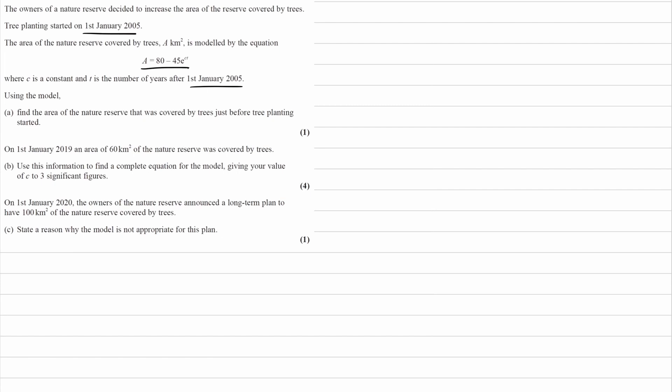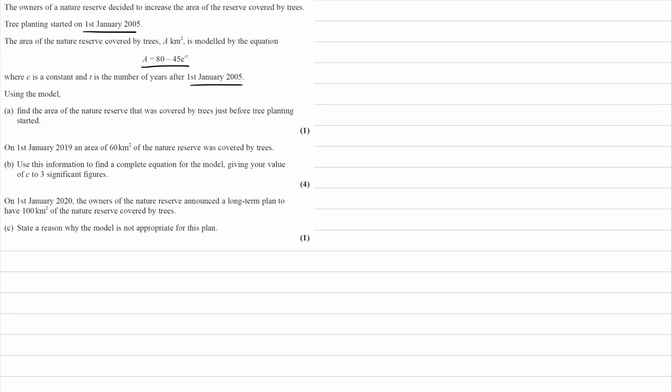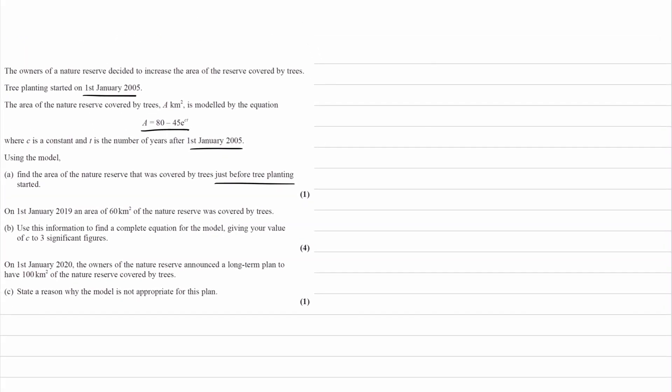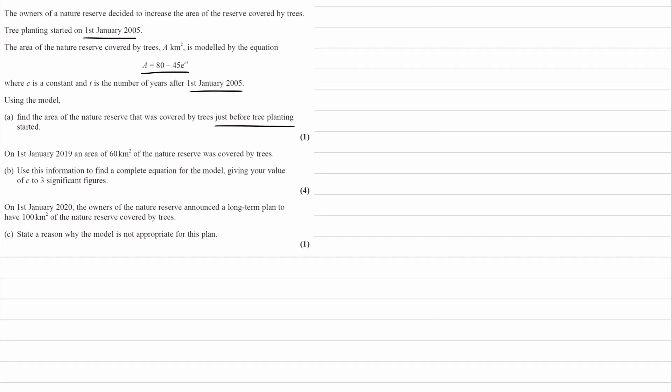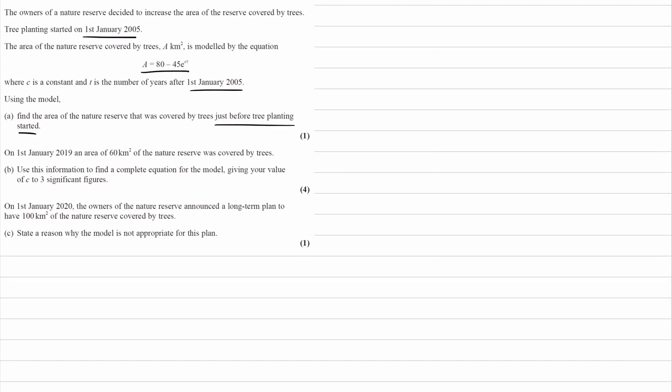For this question, think about just before tree planting started - what would the time be? Once you have a value for time, you can put it into the equation to work out what area would be. T would equal 0. If we put this into our area equation, we get A = 80 - 45e^0. E to the power of 0 is 1.